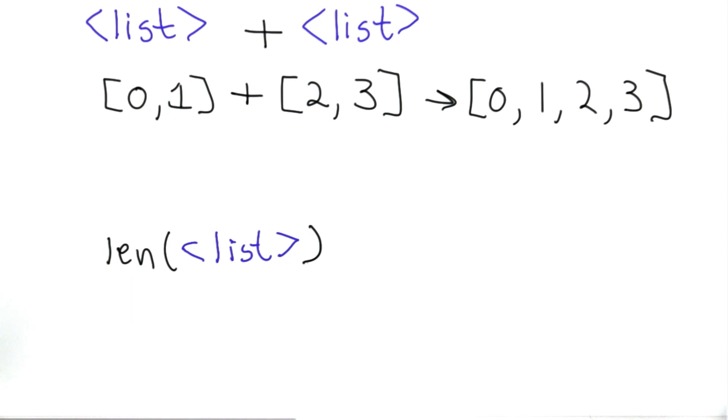And the output from len is the number of elements in the input. So for example, the result of len applied to the list [0,1] is 2, since there are 2 elements in the list.